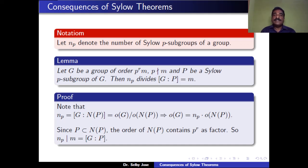By cross-multiplication, we can write: order of G equals NP times order of N(P). But P is a subgroup of N(P), therefore by Lagrange's theorem, order of P divides order of N(P). That means P^R divides order of N(P), so the order of N(P) contains P^R as a factor. Therefore NP divides M, which is the same as the index of P in G.